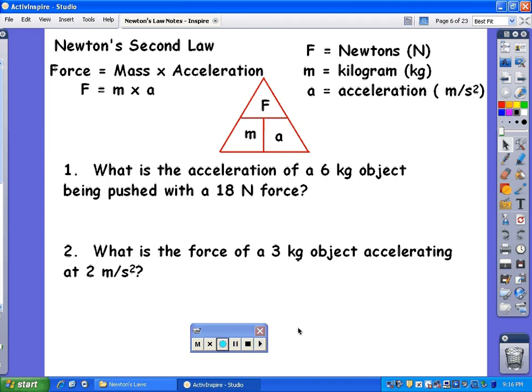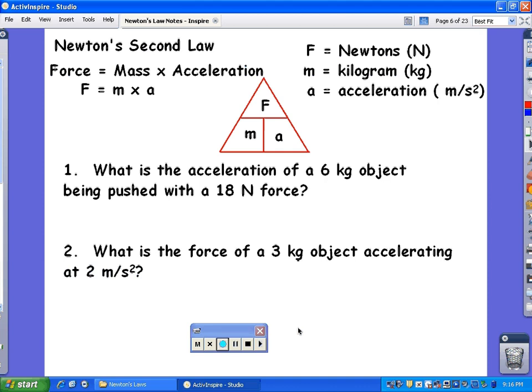This is how you calculate Newton's Second Law: F equals m times a, or ma. Notice the question here: What's the acceleration of a 6 kilogram object being pushed with an 18 Newton force? In this case, you're looking for acceleration, so fill in your variables: 18 Newtons is the force, 18 equals 6 kilograms times a. You got to isolate that a, divide the 6 kilograms out on both sides.